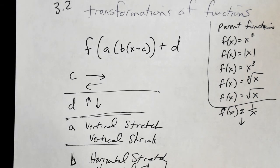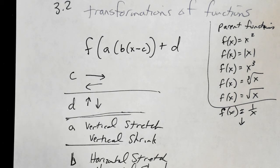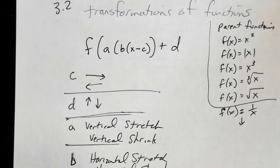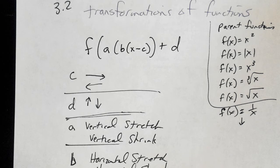These are your parent functions — we already talked about them in the last session. This is the quadratic parabola, your absolute value. For any of these, when you know which function you're using, you're going to put the parent function in the calculator first.